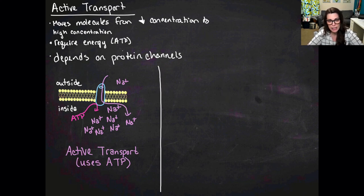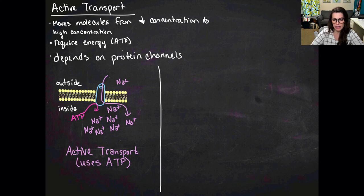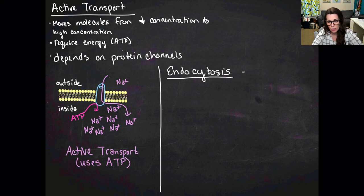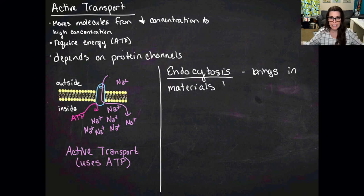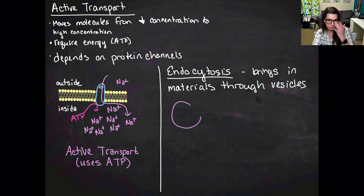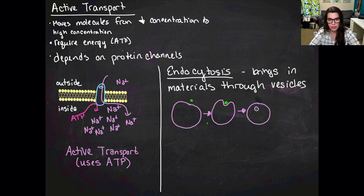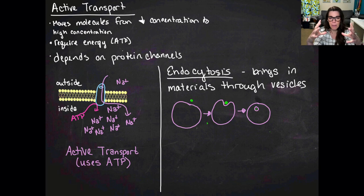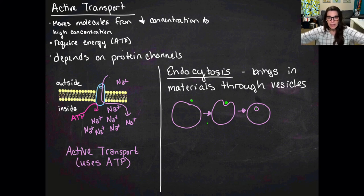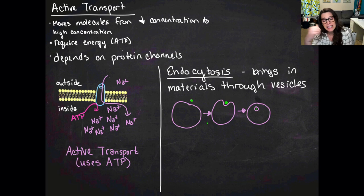There are other ways to move things into and out of the cell that require energy but work differently from basic active transport: endocytosis and exocytosis. Endocytosis brings materials into the cell through vesicles. In the diagram, a food molecule outside the cell is too large to pass through the membrane, so the cell membrane engulfs it and pulls it inside, forming a small vesicle. That vesicle is then broken down by lysosomes and used by the cell.